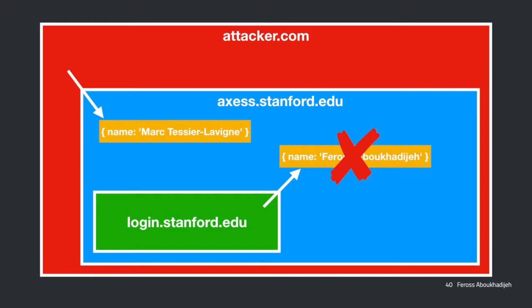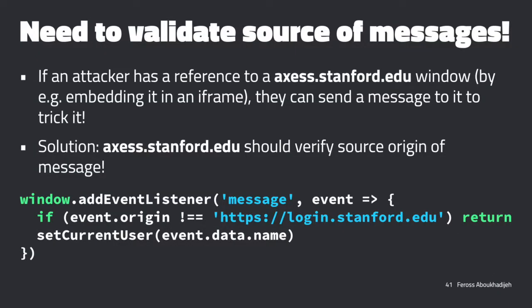The way we fix this is we need to validate the source of our messages. Fortunately the event object has a useful property called 'origin', and we just need to check that against the origin we're expecting to receive messages from. One issue with this API design is it's a bit easier to forget to do this validation. With the sender-side API you can't even call it without passing the origin parameter, so forgetting causes an error - whereas here it's easy to forget to do this validation.